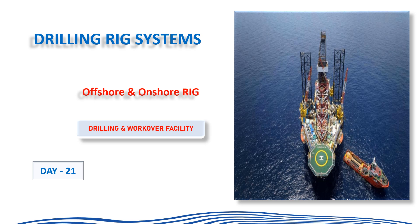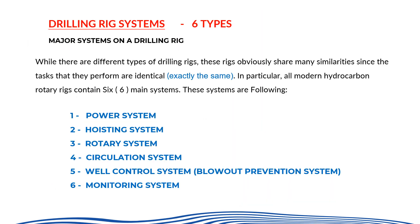Welcome. Today our topic is the drilling rig system — what are the different kinds of systems on which drilling activities are done and all operations are carried out. Today is Day 21. The rig has been categorized into six operation types, and all rigs work according to these six main systems. Most of the equipment used on a rig falls under these systems.